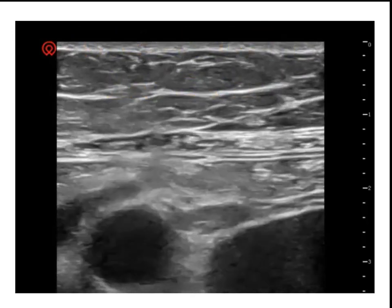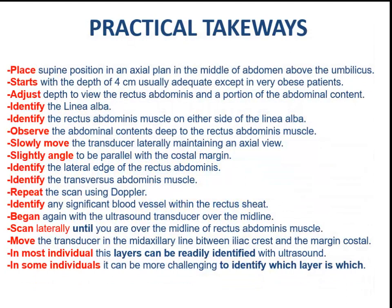Practical takeaways: Place the patient supine and position the transducer in an axial plane in the middle of the abdomen above the umbilicus. Start with a depth of 4 cm, which is usually adequate except in very obese patients. Adjust depth to view the rectus abdominis and a portion of the abdominal content. Identify the linea alba and the rectus abdominis muscle on either side. Observe the abdominal contents deep to the rectus abdominis muscle. Slowly move the transducer laterally, maintaining an axial view, slightly angled to be parallel with the costal margin. Identify the lateral edge of the rectus abdominis and the transversus abdominis muscle. Repeat the scan using Doppler to identify any significant blood vessels within the rectus sheath.